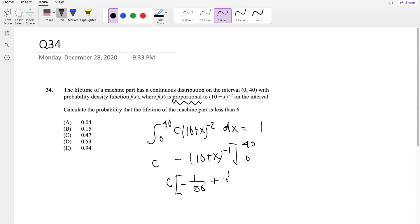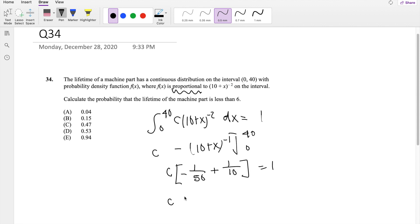Minus minus becomes positive over 1 over 0, so that's 10. So this is essentially c times 2 over 25 is equal to 1. So then c must be equal to 25 over 2.